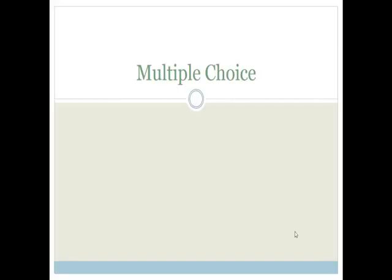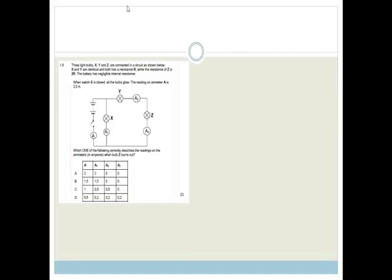First let's look at some multiple choice questions. The first question says three light bulbs X, Y and Z are connected in a circuit as shown. It says X and Y are identical and have a resistance R. So they both have a resistance R, while the resistance of Z is 2R.